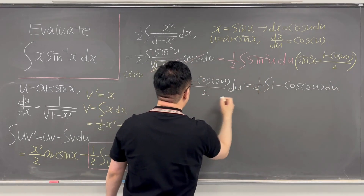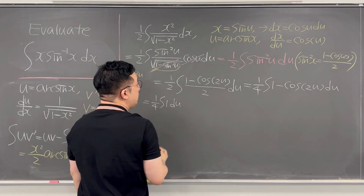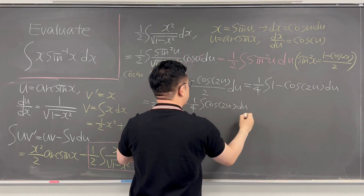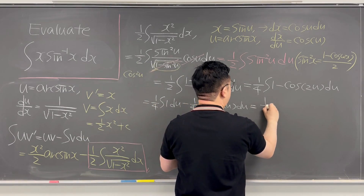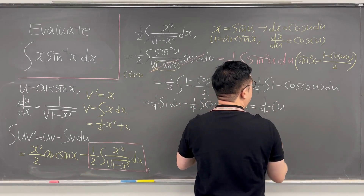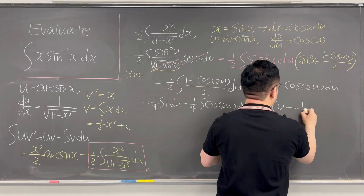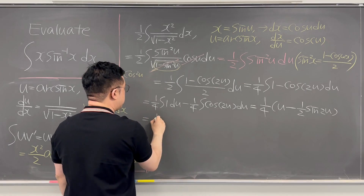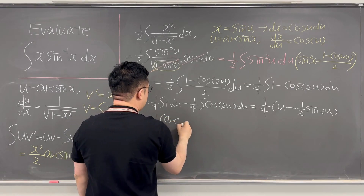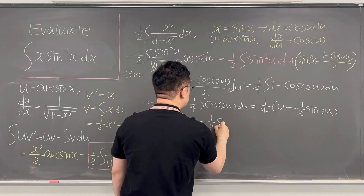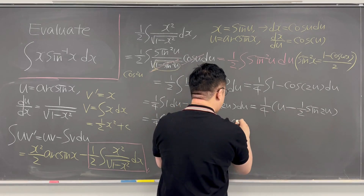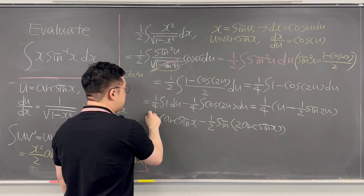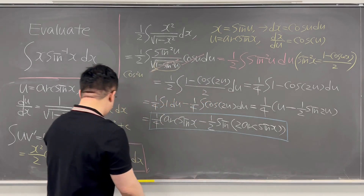Evaluating these integrals gives 1/4·u minus 1/8·sin(2u). Writing everything back in terms of x, this becomes 1/4 times arcsin(x) minus 1/8 times sine of 2·arcsin(x). So this is the expression for this sub-integral.